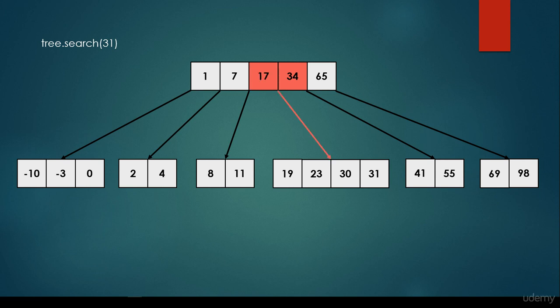So we take this branch and keep considering the items in this node. 31 is greater than 19 so we keep going. It's greater than 23 so we keep going. It's greater than 30 so we keep going. And basically this is the item we are looking for.